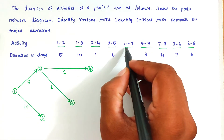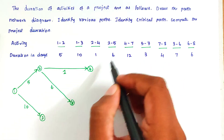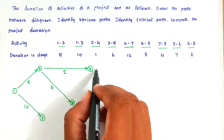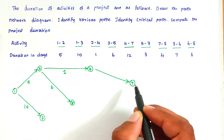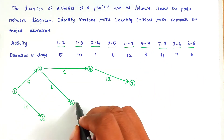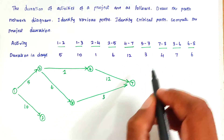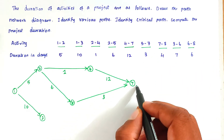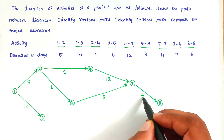Next, activity 4 to 7. We already have 2-5 drawn. So 4 to 7 — we can draw that over here. The duration of 4-7 is 12. Next, 5 to 7 — we can draw 5 to 7. The duration is 3. Next, 7 to 8 — we can draw 7 to 8. The duration of 7-8 is 4.